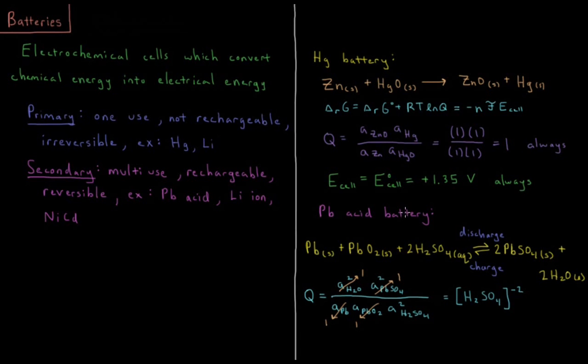A lead acid battery has the following reaction. We have solid lead plus solid lead 4 oxide plus sulfuric acid yields lead sulfate, I assume that's lead 2 sulfate, plus water. It's going to discharge flowing in the forward direction and charge going in the reverse direction. The activity quotient here is going to equal, for the products, we have H2O squared times the activity of lead sulfate squared divided by the activity of lead times the activity of lead oxide times the activity of H2SO4 squared.